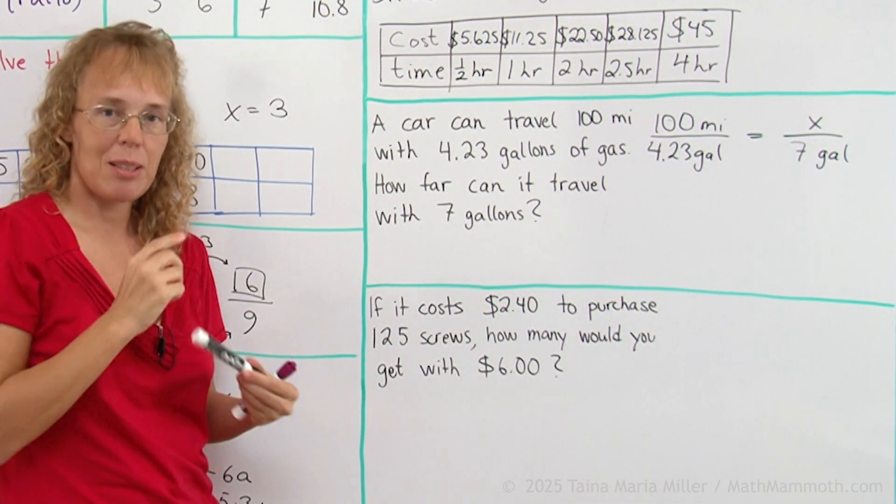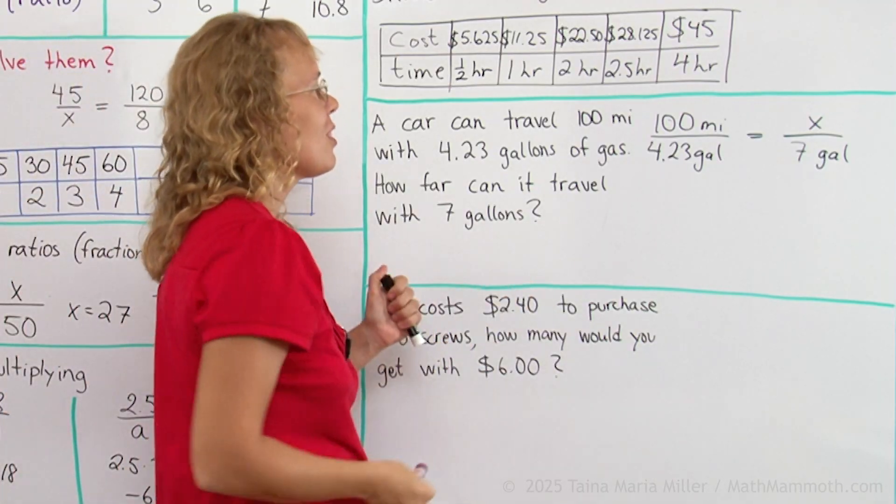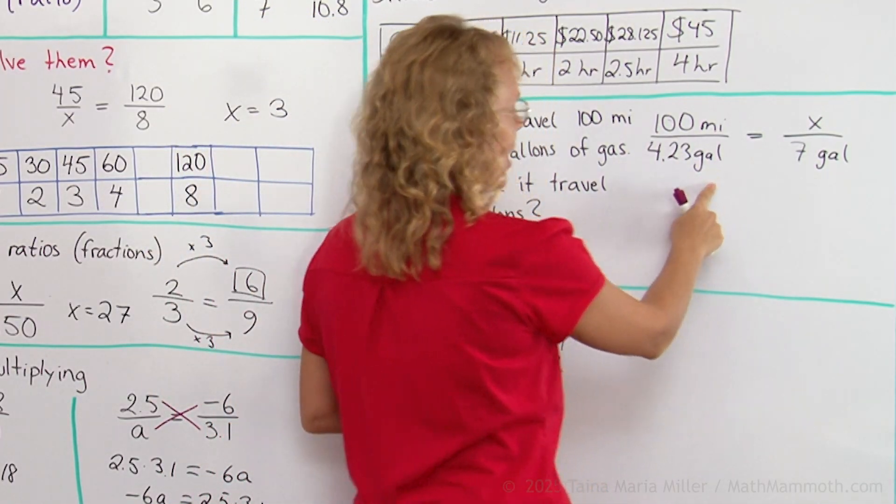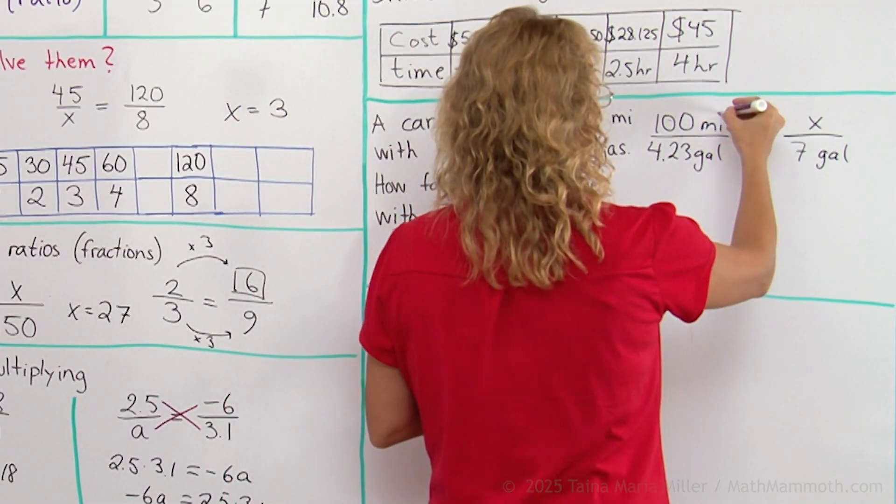That's my setup for the proportion and this step is very important that you set it up right. Because if you don't, then you will get the answer wrong. Notice that in both cases the gallons are in the denominator, so now I cross multiply.